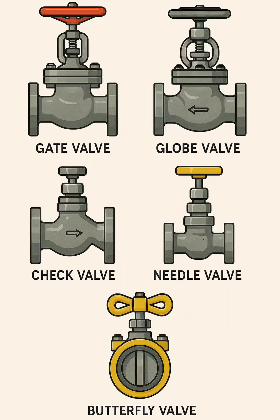Globe valve. Design: Has a disc that moves against the flow stream, with a seat arranged in a globe-shaped body. Function: Designed for throttling and regulating flow.